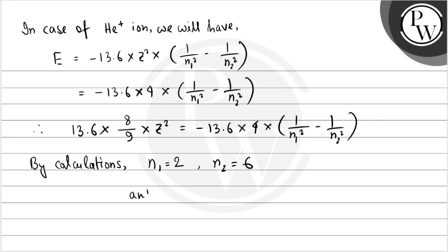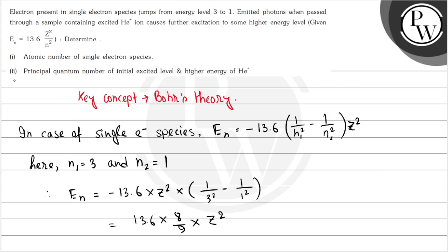So here in the question it is asked: the atomic number of single electron species, that will be 1, and the principal quantum number of initial excited level and higher energy of He+. So the first part will be z equals 1, second part is...